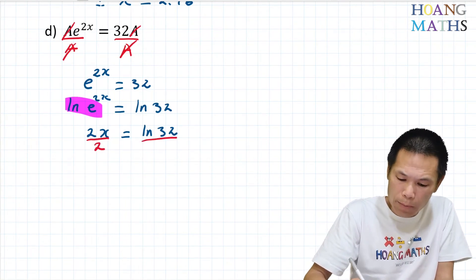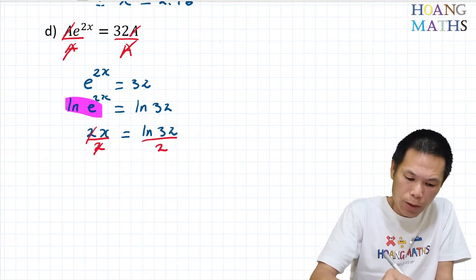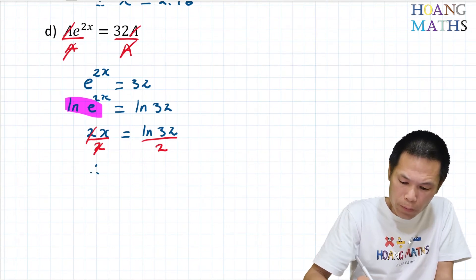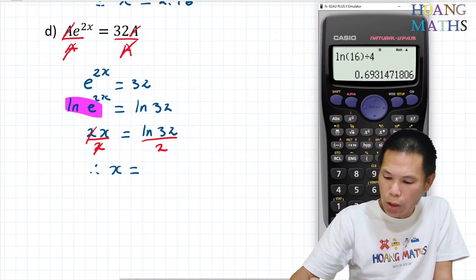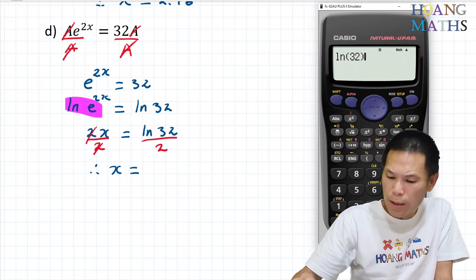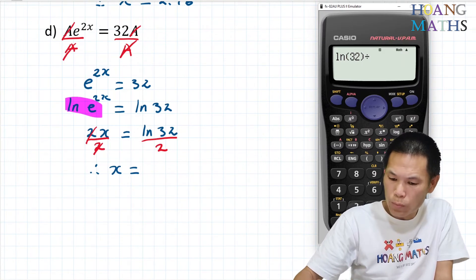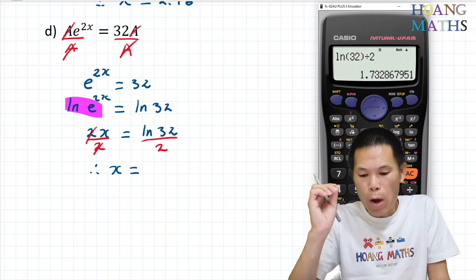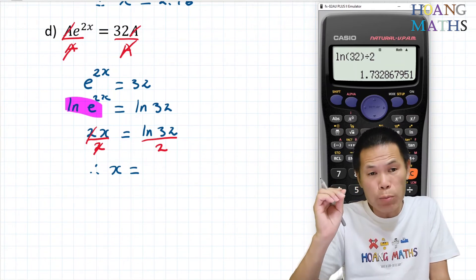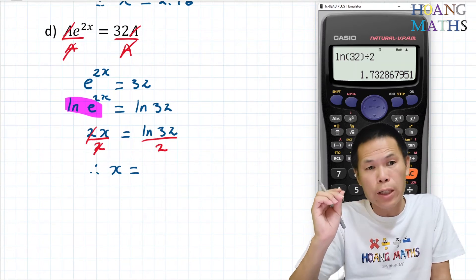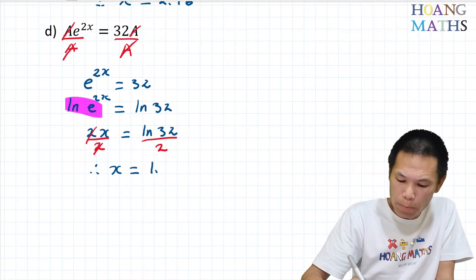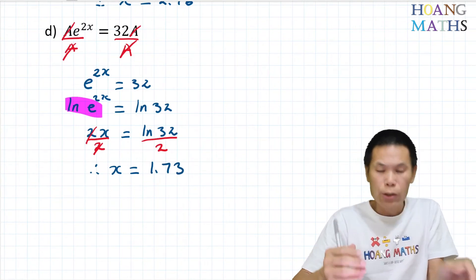To solve for x, divide by 2 on both sides: this cancels out. x is equal to — I put that on the calculator: ln(32) divided by 2. That gives 1.7328. Two decimal places: 1.73. So x equals 1.73.